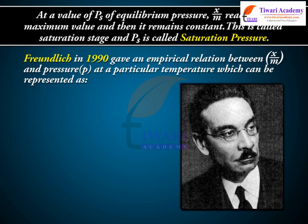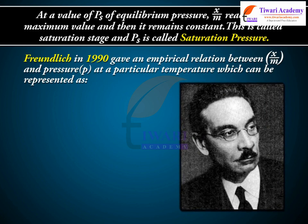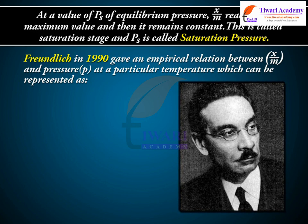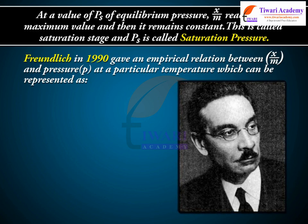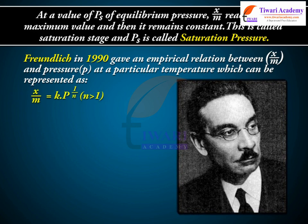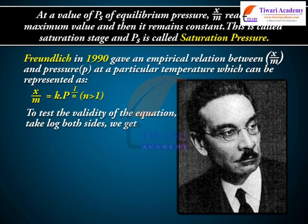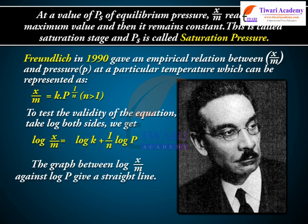Freundlich in 1909 gave an empirical relation between x/m and pressure p at a particular temperature, which can be represented as x/m = k·p^(1/n), where n is greater than 1. To test the validity of the equation, take log of both sides. We get: log(x/m) = log k + (1/n)·log p. The graph between log(x/m) against log p gives a straight line.